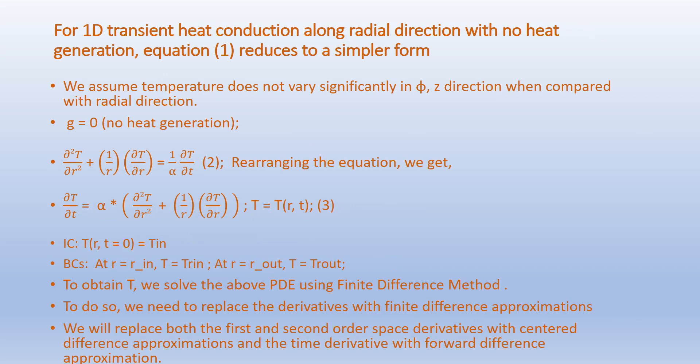For the 1D transient heat conduction problem along the radial direction with no heat generation, the general equation reduces to a simpler form. We assume temperature does not vary significantly in the φ or z directions compared with the radial direction, and there is no heat generation term, so g equals zero.